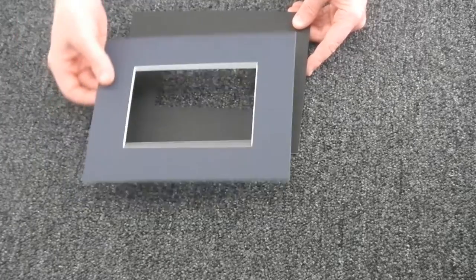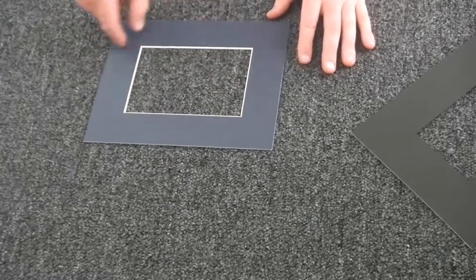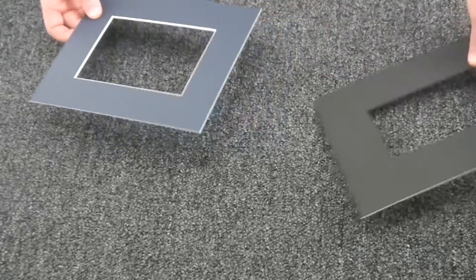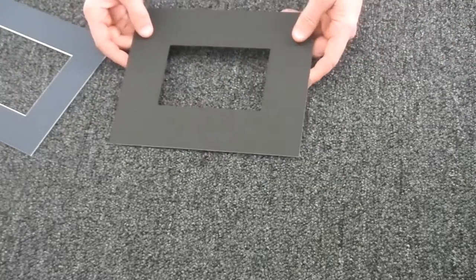A reverse bevel is just a mat that's been cut backwards, basically so you don't see the bevel. It's a great way on some art where you don't want to have this distracting white line inside of your mat on your image, where maybe you just want to have the whole color show and not have to have that bright white line.